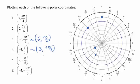2 negative pi over 6. Now we'll rotate backwards into the fourth quadrant, pi over 6. With a positive 2 radius, put it right here.